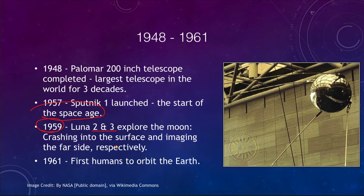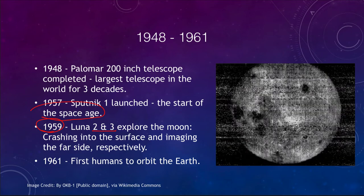Luna 2 was the first time we put something on another world. Luna 3 gave us an image of the far side of the moon for the very first time. While not a great image, it was very important for our understanding — until 1959, we had not known what the far side of our nearest neighbor in space looked like.